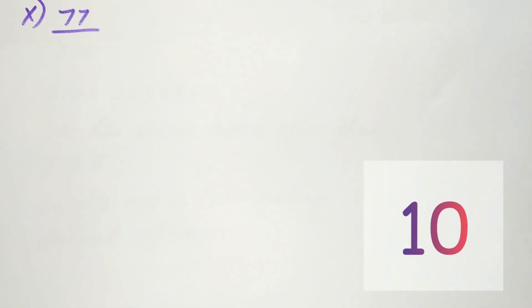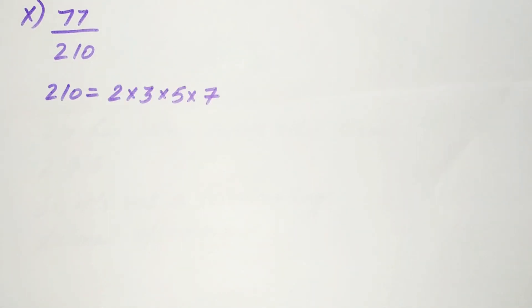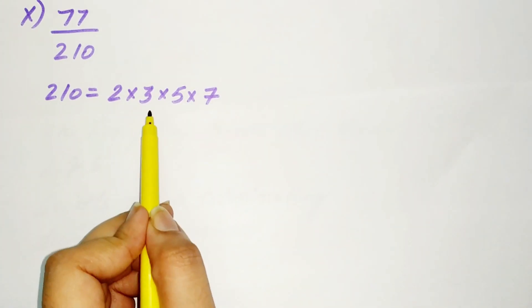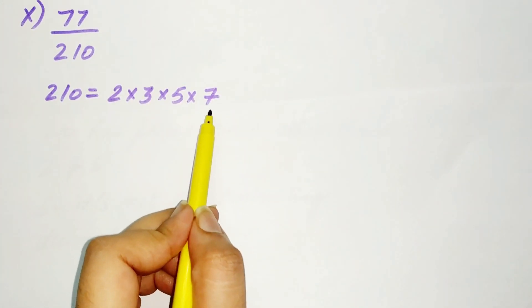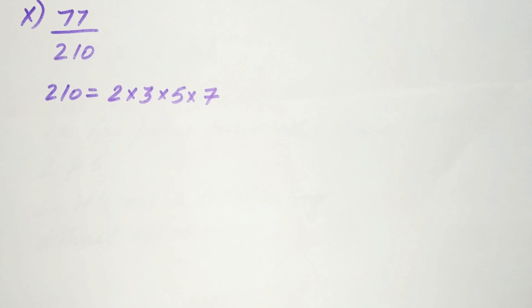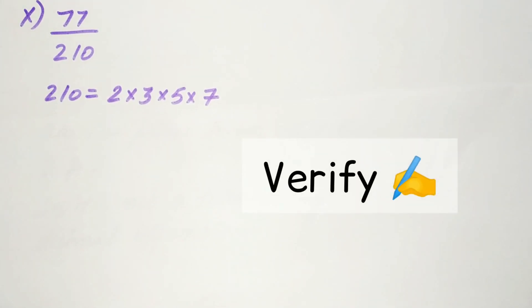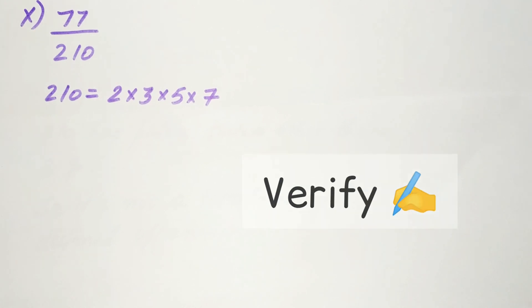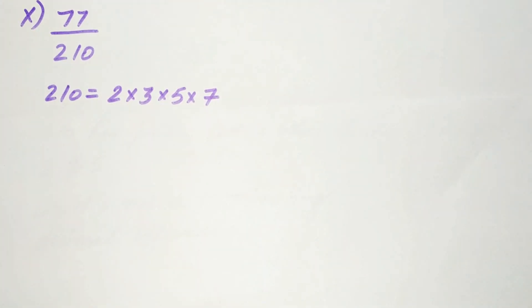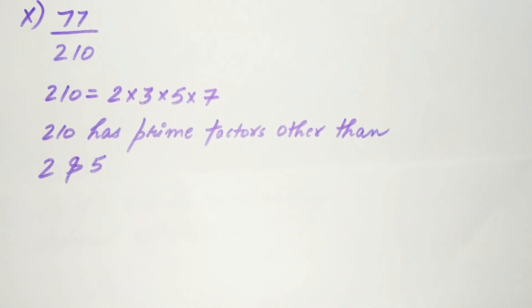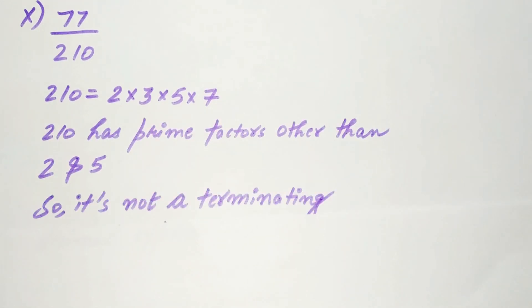The tenth part is 77 divided by 210. We know 210 equals 2 multiplied by 3 multiplied by 5 multiplied by 7. Try to find out the prime factors of 210 and verify whether I'm correct. Since the prime factors of 210 are other than 2 and 5, it's not a terminating decimal expansion. This brings us to an end of question number 1.